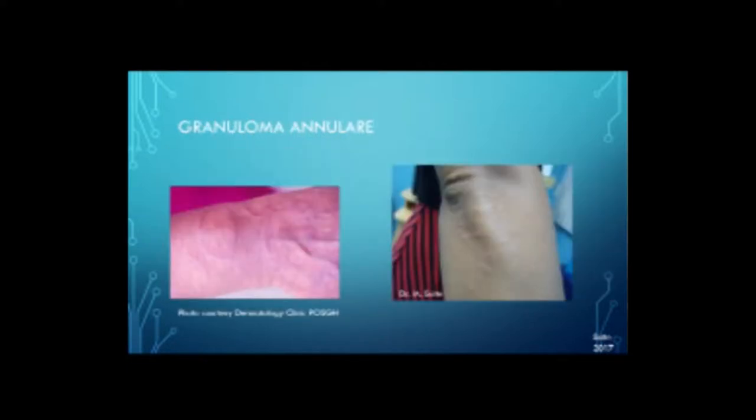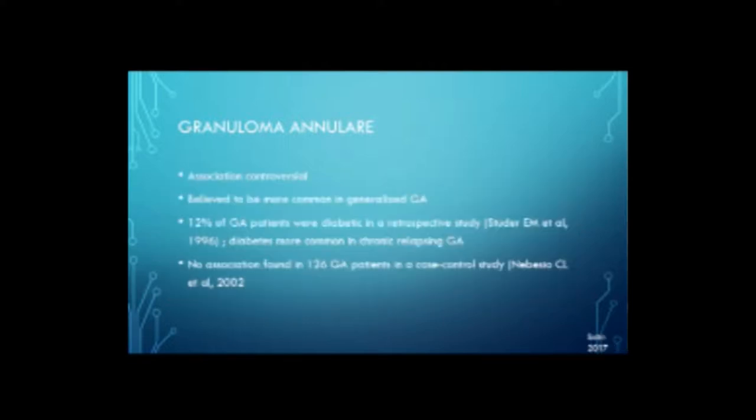Granuloma annulare presents as annular, ring-shaped lesions looking like ringworm, but without that scaliness at the edge. You can also have it without the ring shape. The association with diabetes is controversial — it's believed to be more common in persons with generalized granuloma annulare. In one retrospective study, 12% of GA patients were diabetic, but in a case-controlled study with 126 GA patients, they found no association at all, so the jury's still out on that.